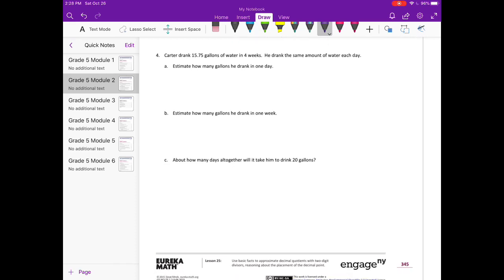Carter drank 15.75 gallons of water in 4 weeks. He drank the same amount each day. Estimate how many gallons he drank in 1 day. 15.75 gallons in 4 weeks, but we're asking about 1 day. 4 weeks times 7 days equals 28 days. We need to do 15.75 divided by 28, but we're estimating.